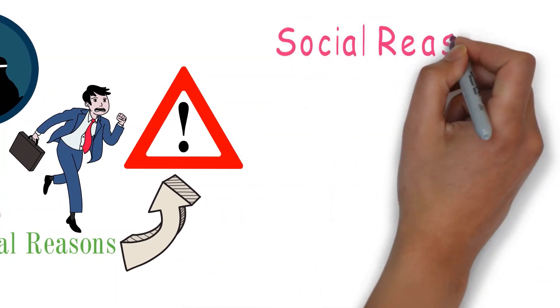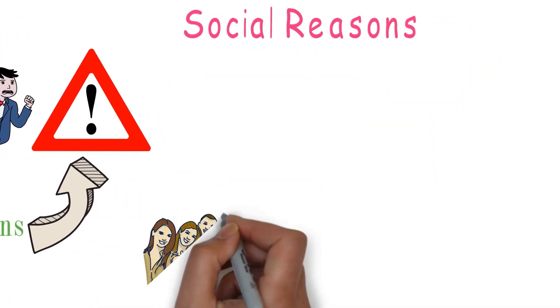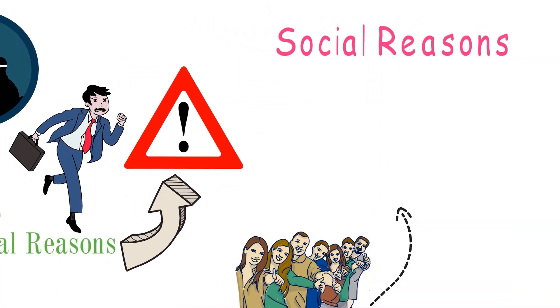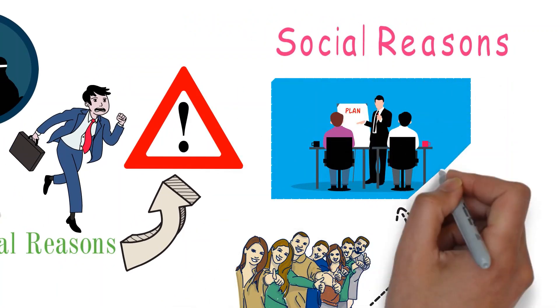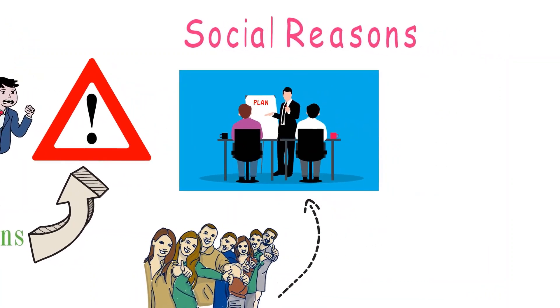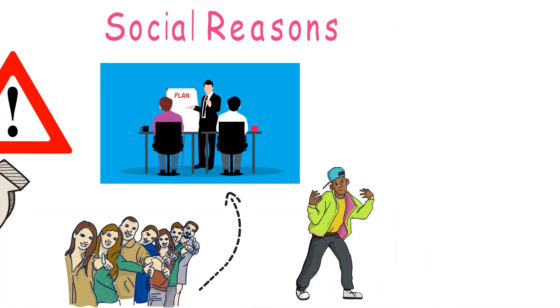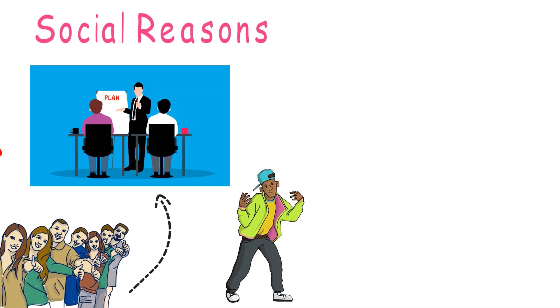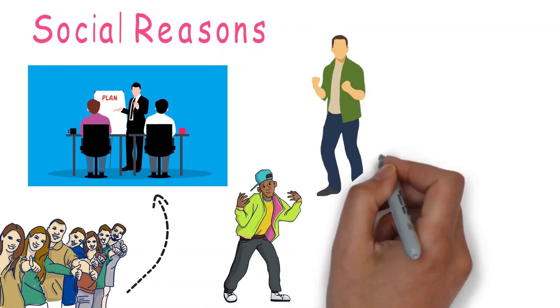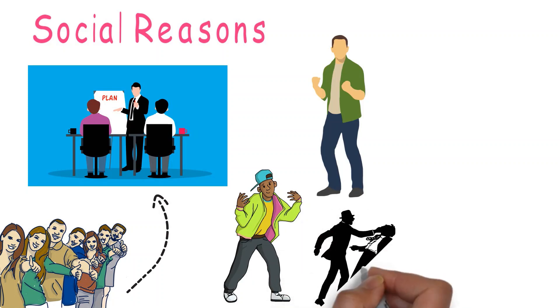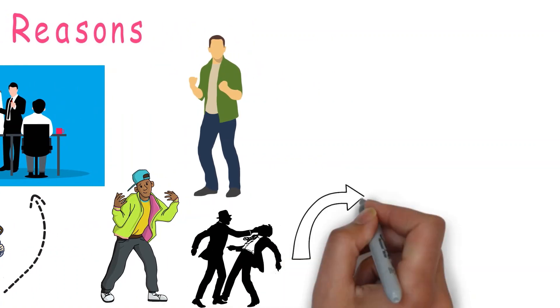And lastly, social reasons. People can also be motivated to believe in conspiracy due to social reasons. Some researchers have hypothesized that by believing in conspiracies that portray out-groups as the opposition, people are able to feel better about themselves and their own social group. Those who believe in the conspiracy feel that they are the heroes of the story, while those who are conspiring against them are the enemy.